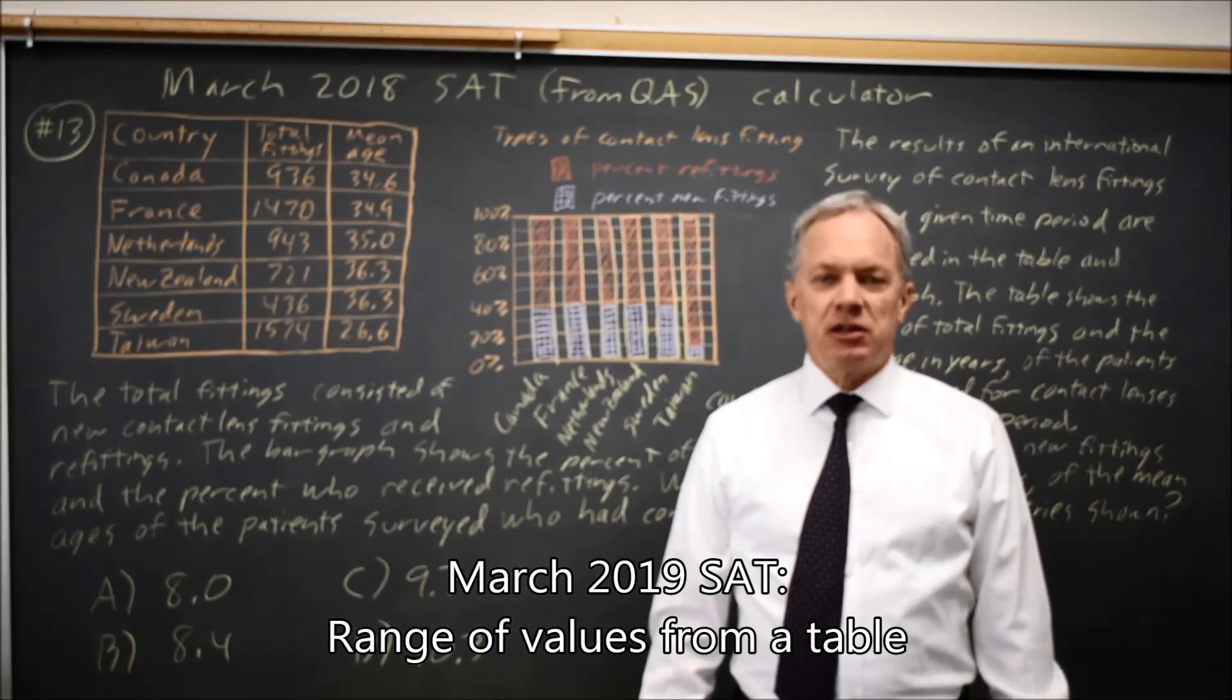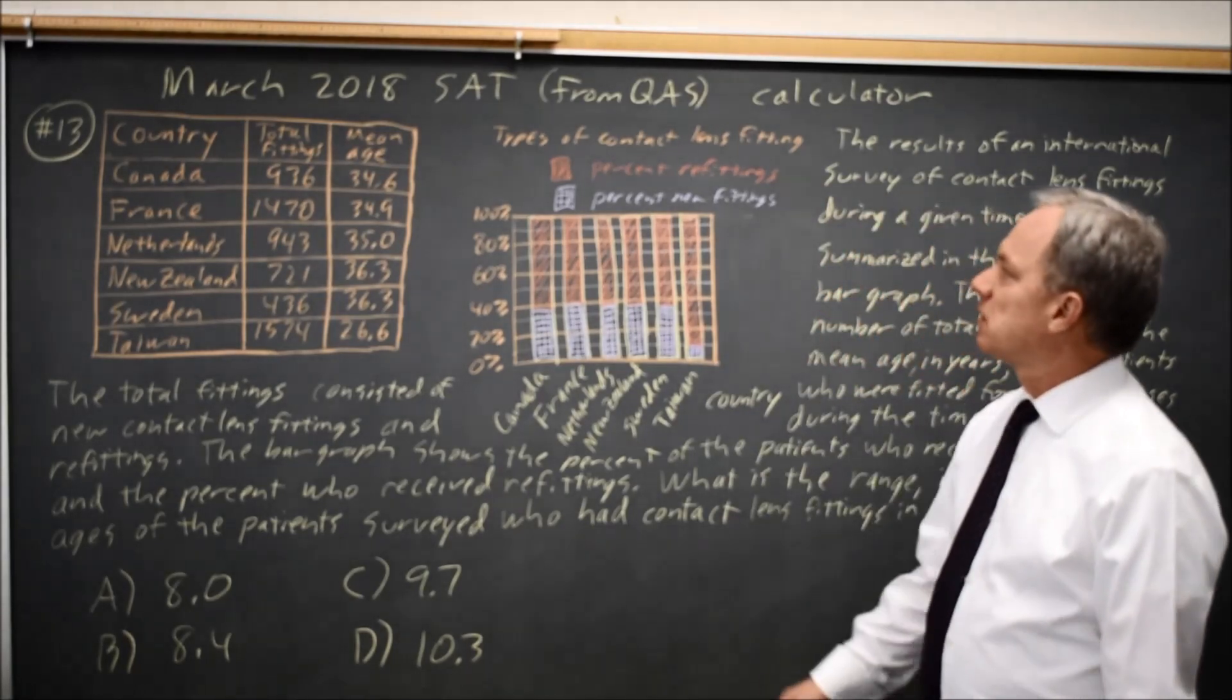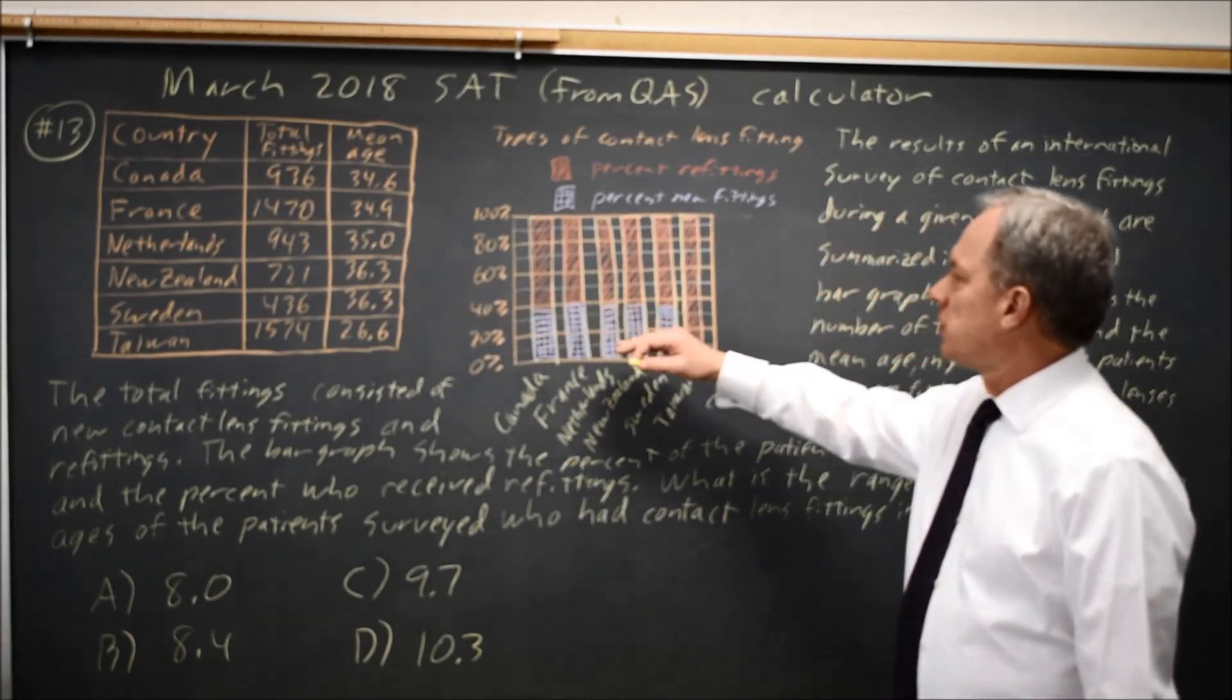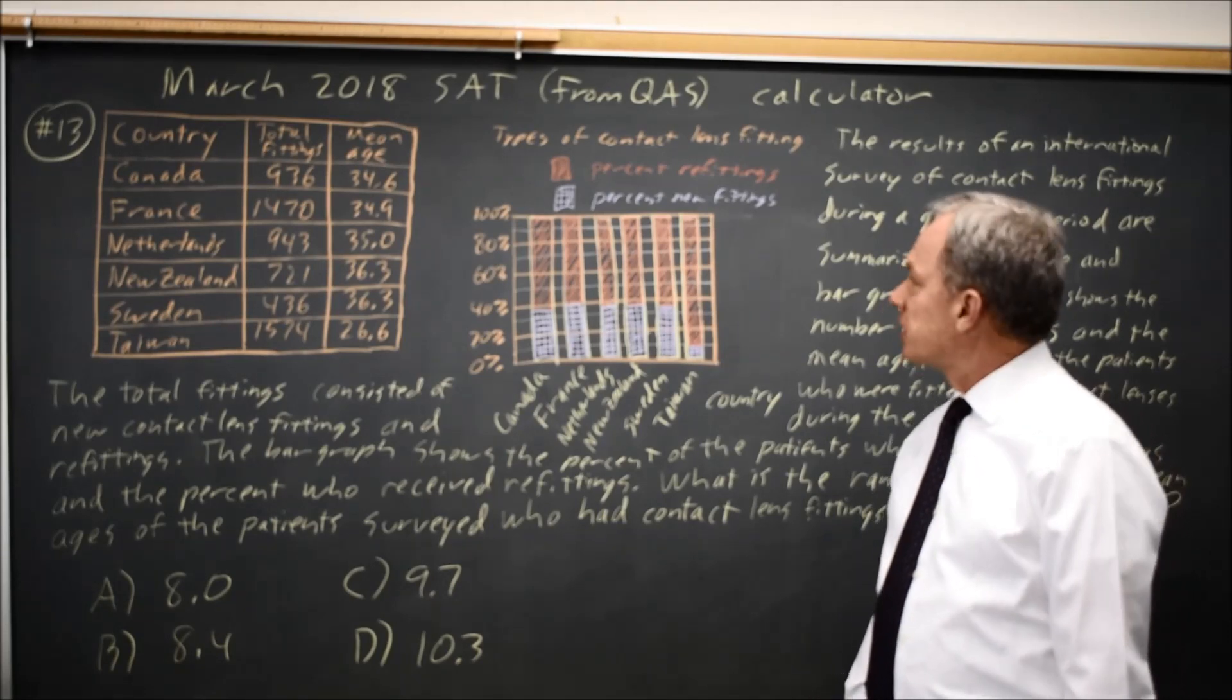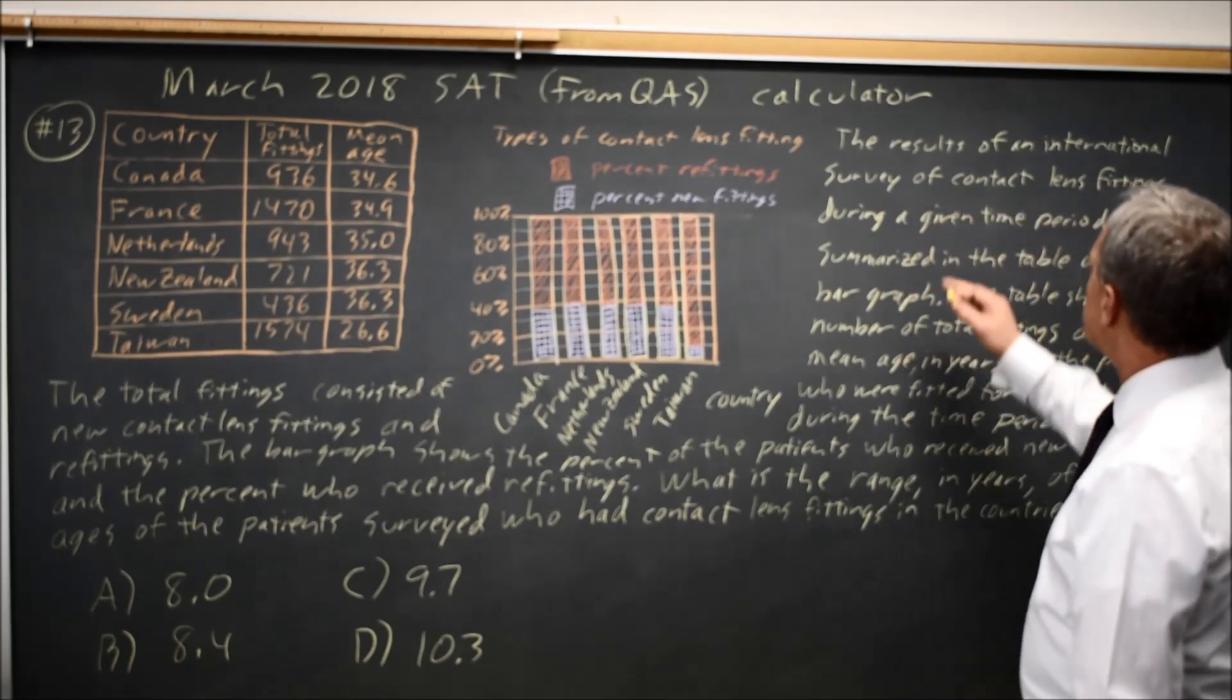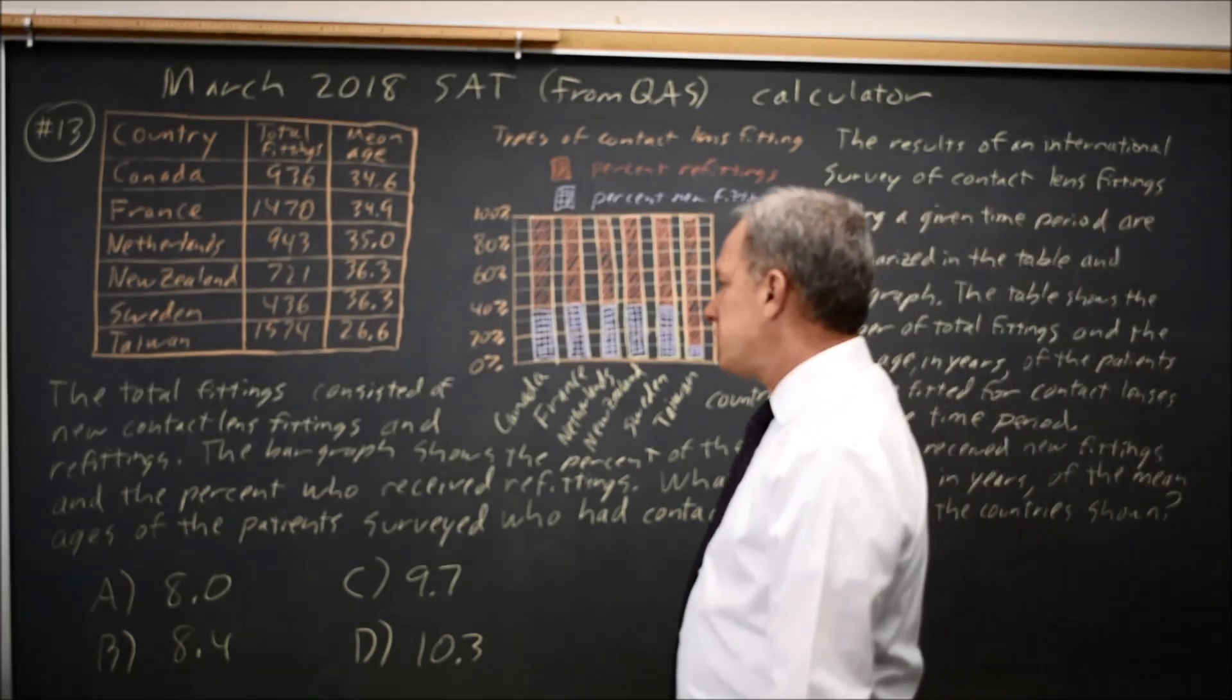This is calculator question number 13 for the March 2018 SAT. College Board gives us a table and a bar graph about contact lens fittings. This is based on a survey during a time period in various countries.